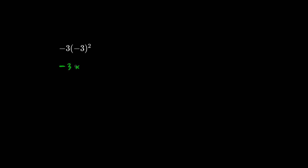Here we have negative 3 times negative 3 squared. We must do the exponents first. So negative 3 times 9 is negative 27.